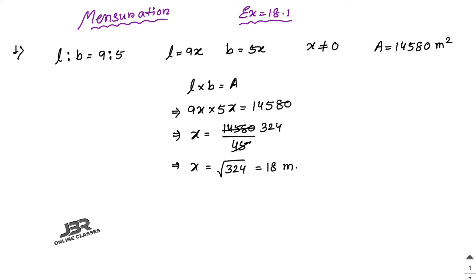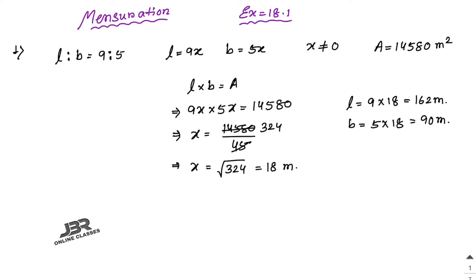If x equals 18, then length equals 9 into 18 and breadth equals 5 into 18. So the length is 162 meters and the breadth is 90 meters.